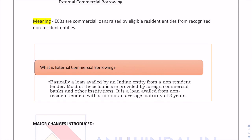Firstly, we will understand what an external commercial borrowing is. ECB is an instrument used in India to facilitate Indian companies to raise money outside the country. It is raised by eligible resident entities — that is, Indian residents — from recognized non-resident entities, meaning money raised from outside India by eligible Indian entities.